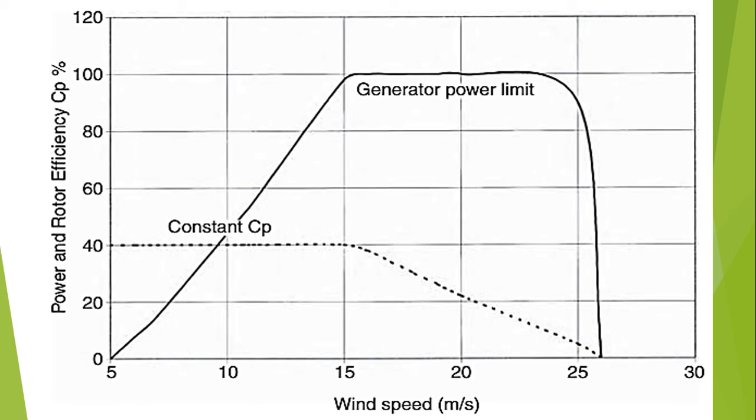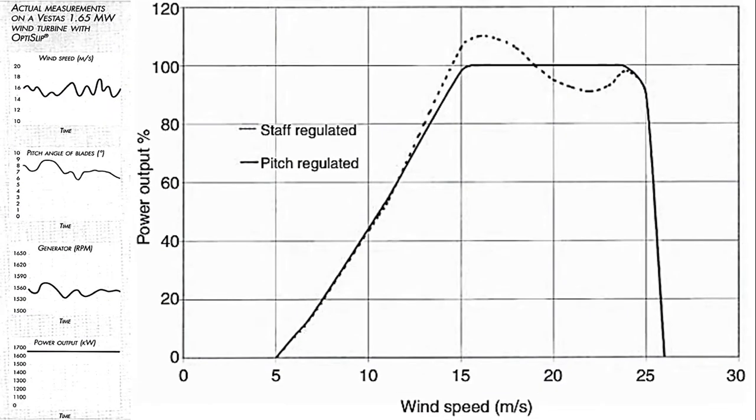wind speed. So the efficiency is lower. However, if we are using a certain control mechanism to increase the overall efficiency, then the generator power limit will be increased with respect to wind speed. This is the second curve and this has been plotted for the two types of control mechanism.